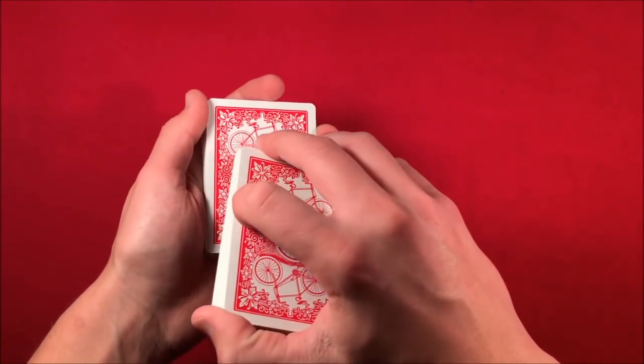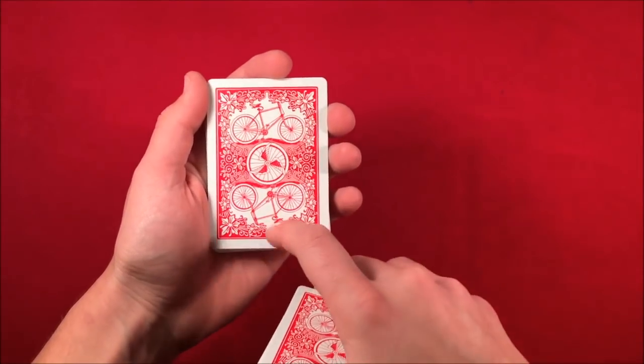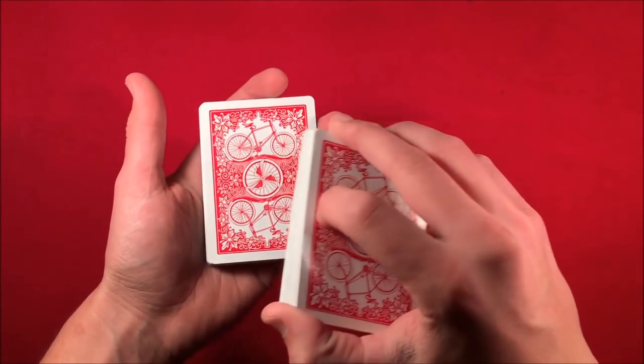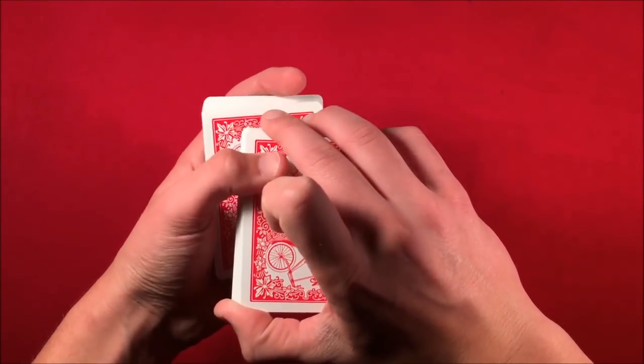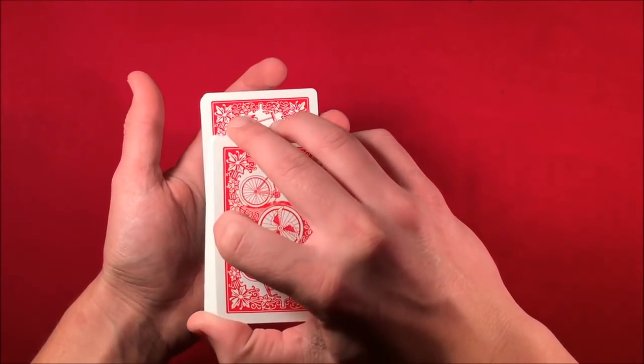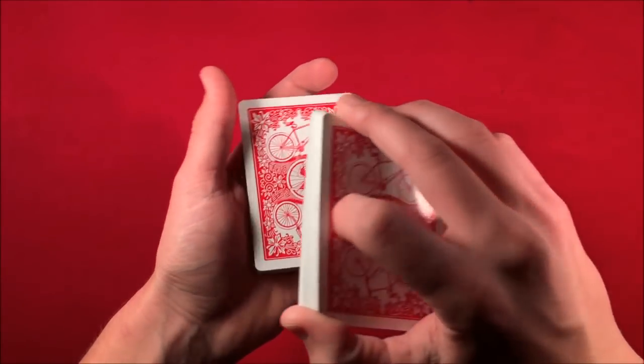From here you're going to dribble the cards kind of not on top of the deck, because obviously you want to get a pinky break. What you have to do is dribble it so where the top half of the deck, as you can see here in my right hand, dribbles down and it's going to land like this.